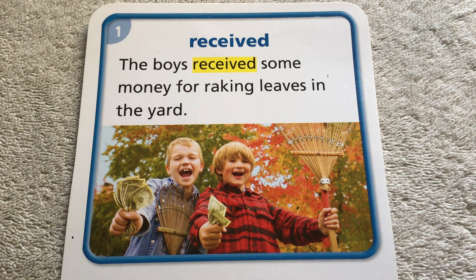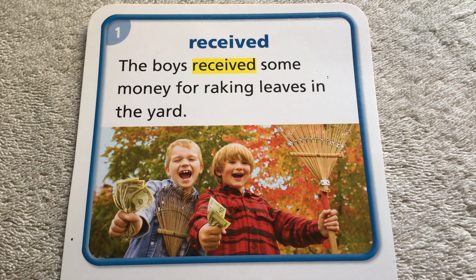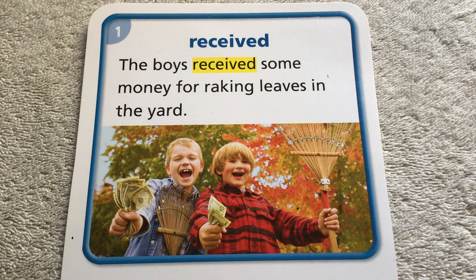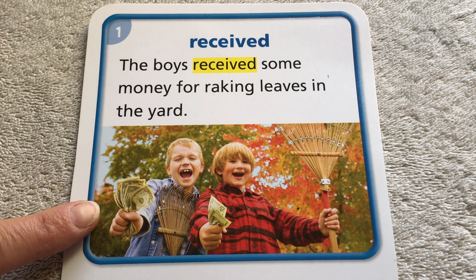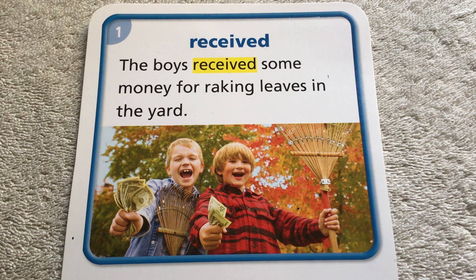Since this is the first time that I'm going over this vocabulary, I will read the vocabulary word in the sentence on the front, and I will give you the definition and a little explanation about what each word means. So our first word today is the word received. On the front of the card it says, the boys received some money for raking leaves in the yard. And if you look in the picture, you can see they're holding a fistful of money out. So when you receive something, or if you received something, it means someone gave something to you or sent something to you. So these boys raked leaves and they received, or someone gave them money for doing that job.